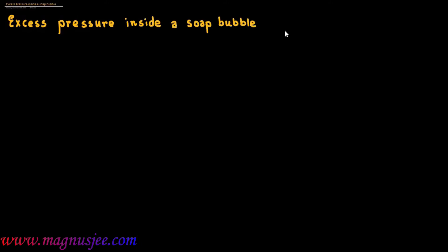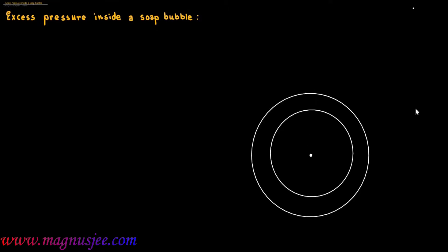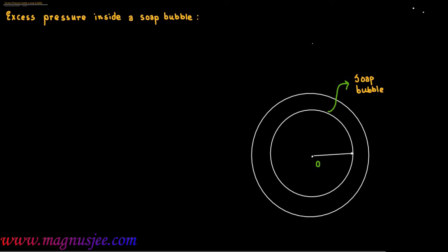The excess pressure inside a soap bubble — we can draw the diagram of a soap bubble which has two free surfaces. The center of the soap bubble is O, and r is the radius of the soap bubble.